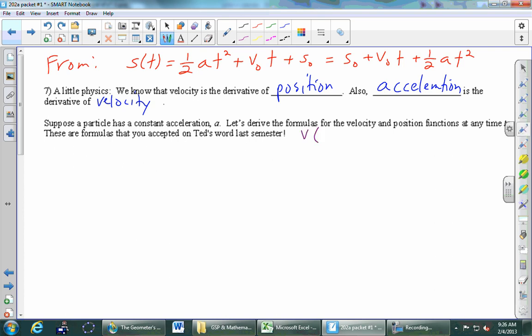So suppose a particle has constant acceleration a. We're going to derive the formulas for velocity and that red position function at any time t. It's something that you took on Ted's word last semester. Let's see if we can verify it right now. I am going to stick on here some additional stuff. I'm going to say that the velocity at time zero, just to give a name to it, is V naught, the same name that you guys have been giving it for a semester. And also the position at time zero, whatever number that is, we're going to call that s sub zero. So those are our two initial conditions.